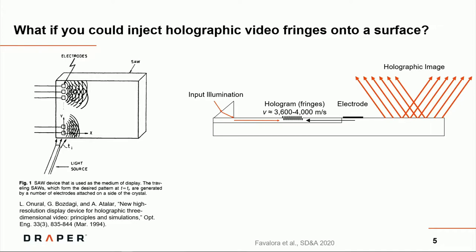What if you could just inject holographic video fringes onto a surface? This is something, for example, proposed by Professor Anurall in the mid-'90s, where he talked about simulating a crystal, such as lithium niobate, which is piezoelectric. Metallized electrodes are deposited on the front surface, excited with some pretty complicated waveforms, and upon illuminating it with a laser, they simulated what kind of holograms could be emitted from it.